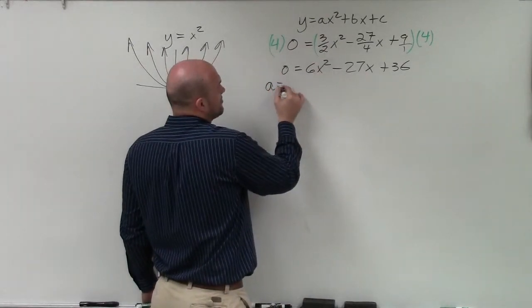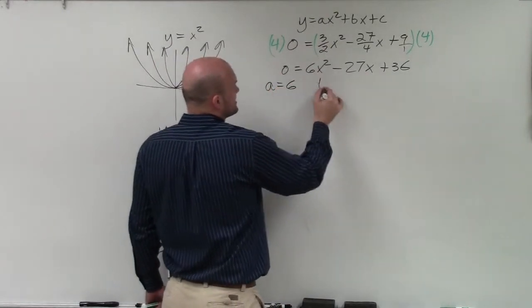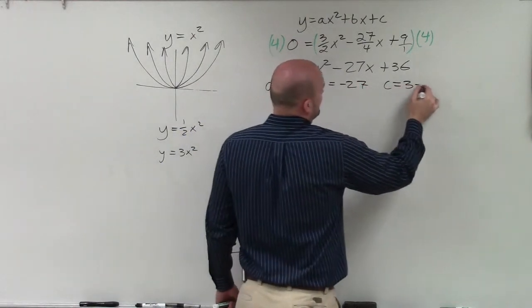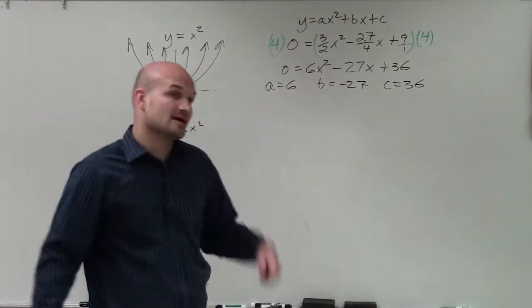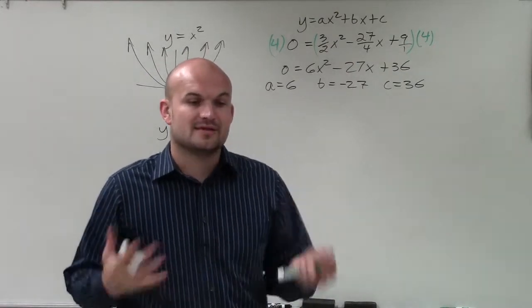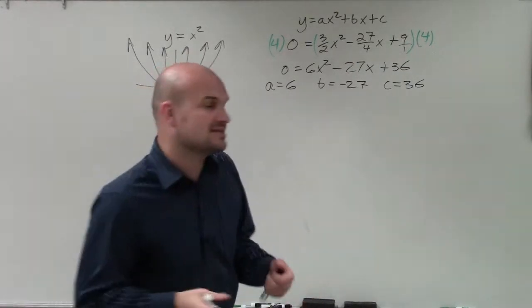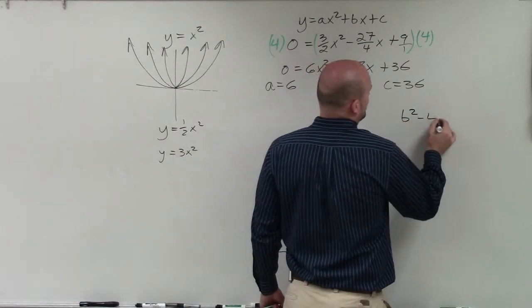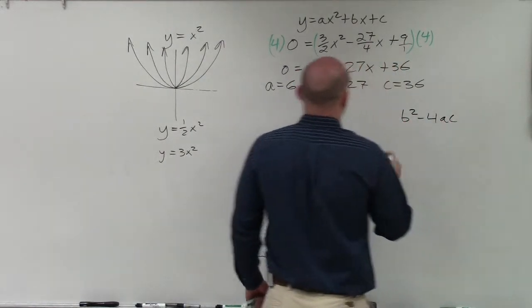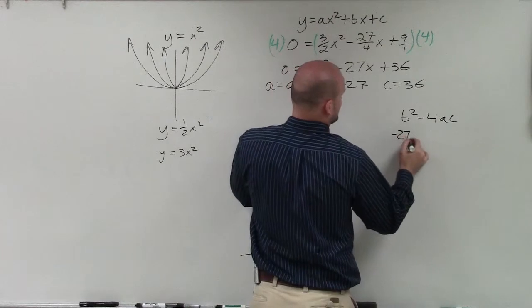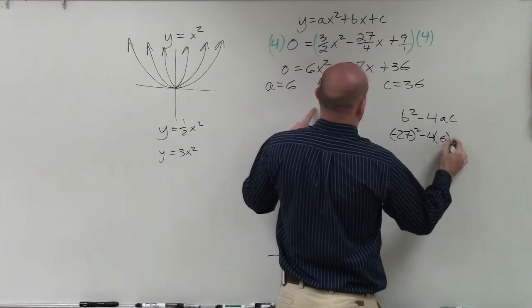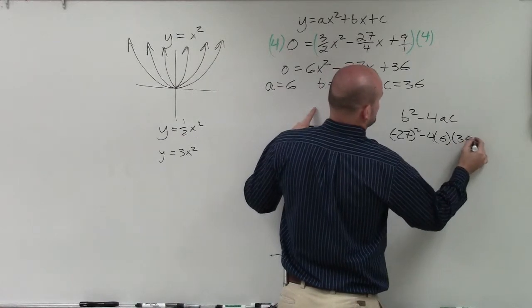Now the next thing I want to do is label my a, b, and c. So a is 6, b equals negative 27, and c equals 36. Now the next thing I want to do is now apply the discriminant so I can determine what type of solutions I have. So I take b squared minus 4 times a times c. And b, in this case, is a negative 27 squared minus 4 times a, which is 6, times c, which is 36.